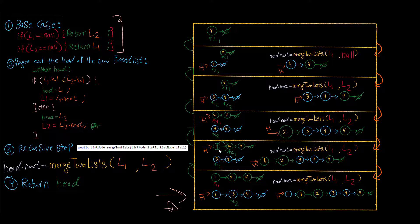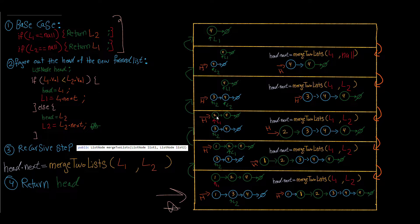We follow the arrow to the next sub-problem: list one has nodes two and four, list two has nodes three and four. Neither is null. We make a head pointer — is list one dot value less than list two dot value? Two is less than three, so head points to list one. We advance list one to four, then call the recursive step again with list one now pointing to four.